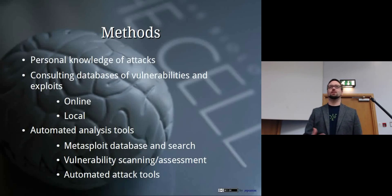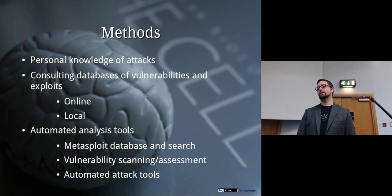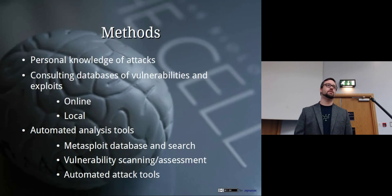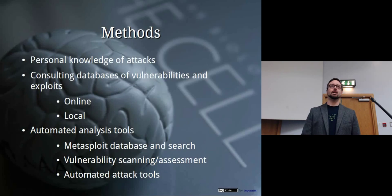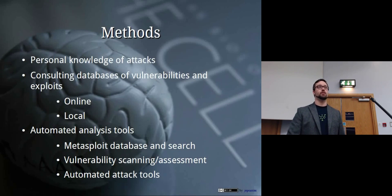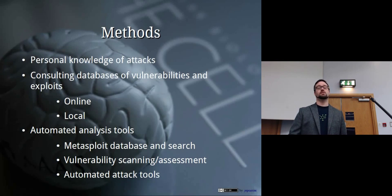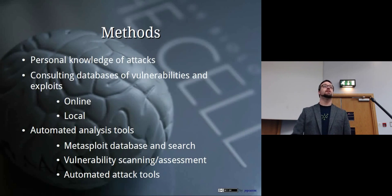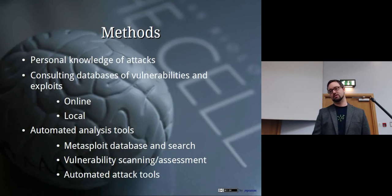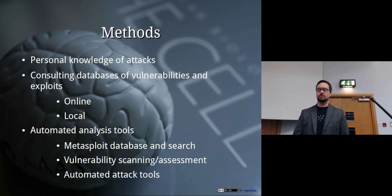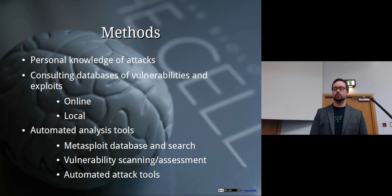There are so many software vulnerabilities out there that you're not going to know all of them, so there are a few ways you could check. You can use databases — online databases like SecurityFocus where you look up the software and it tells you about what vulnerabilities are likely to exist. There are local databases on your own computer, and there are automated analysis tools you can fire at a server which will figure out what it's vulnerable to and suggest attacks. So you can use Metasploit's database and search, vulnerability scanning tools like Nessus, and automated attack tools like what's included in Armitage.